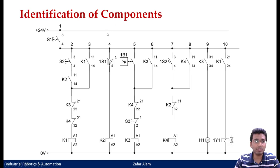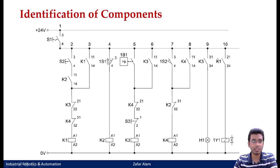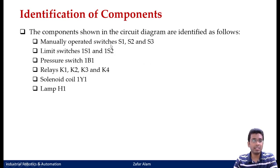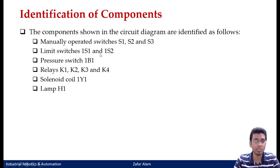You can also see certain current paths, although we will discuss them later. Let me limit us to identification of components. The components shown in the circuit diagram include manually operated switches S1, S2, S3; limit switches 1S1, 1S2; pressure switch 1B1; relays K1, K2, K3, K4; and solenoid coil 1Y1.